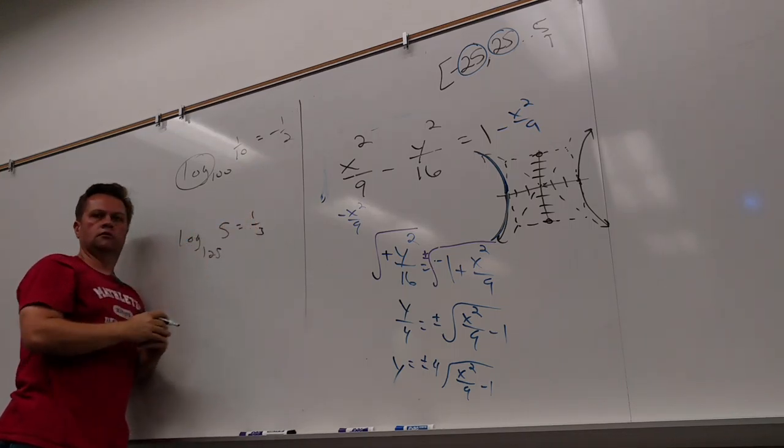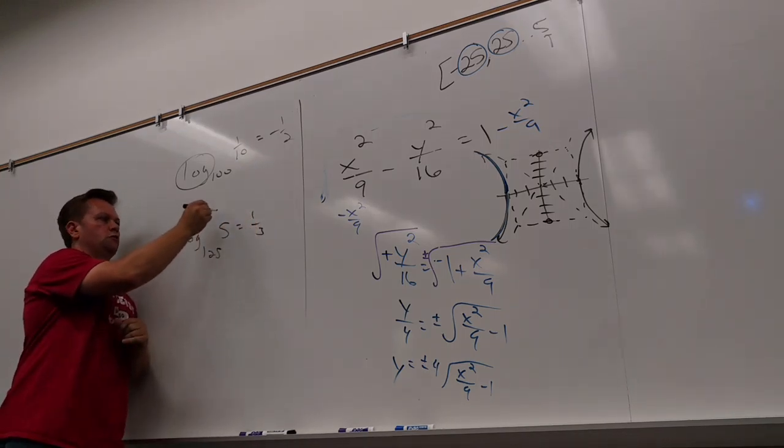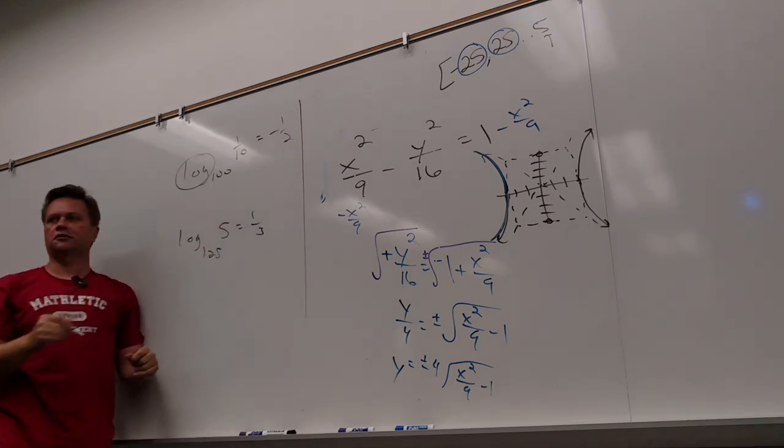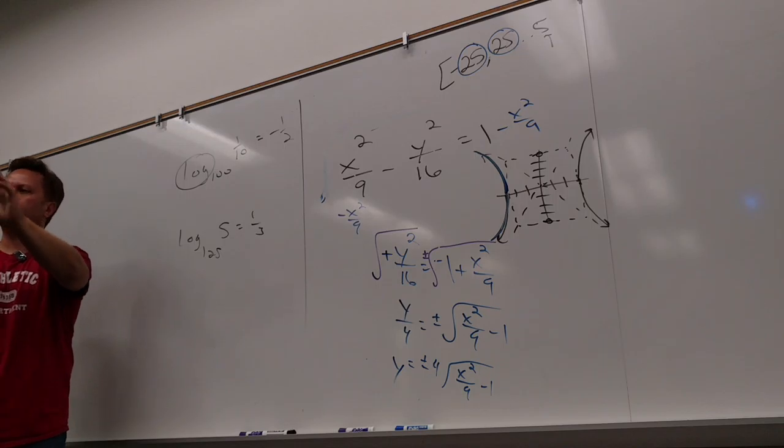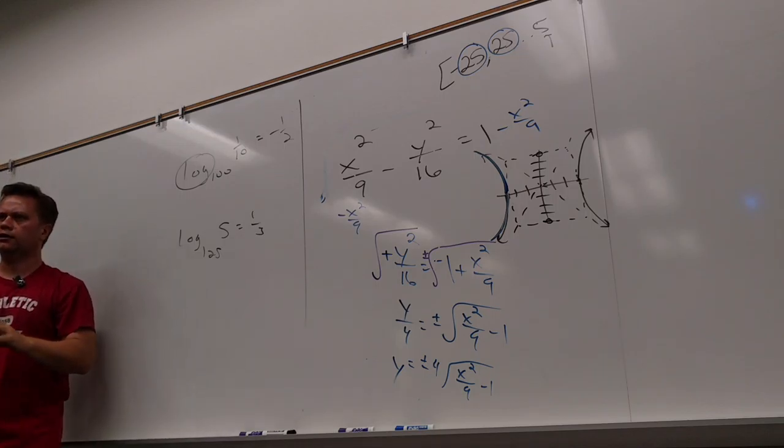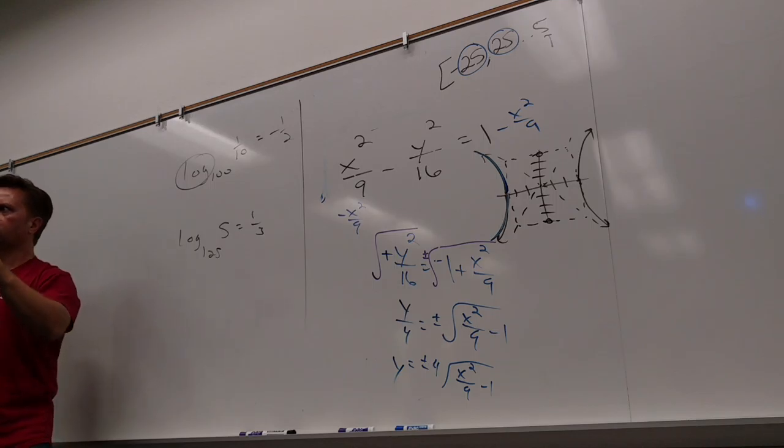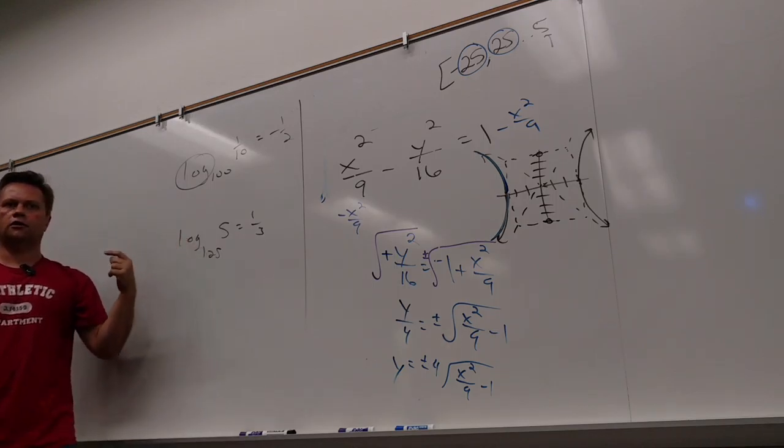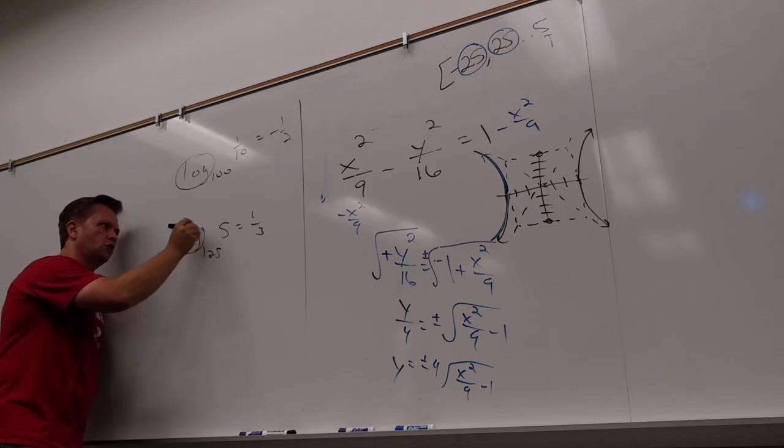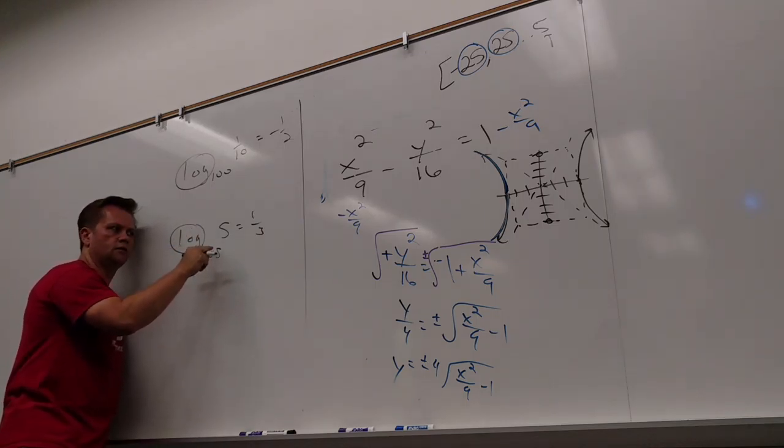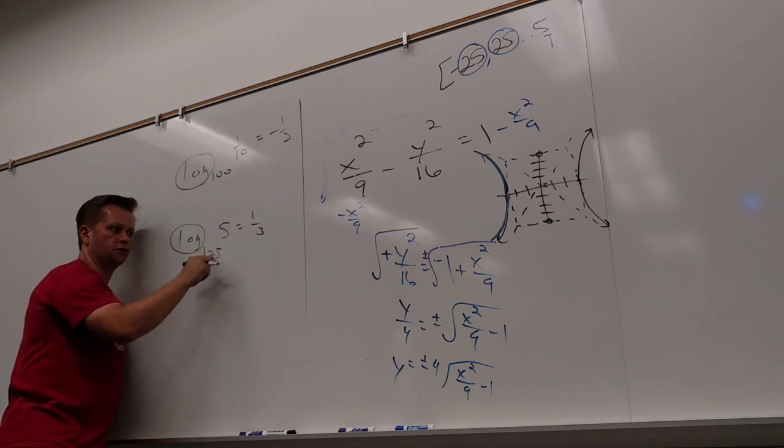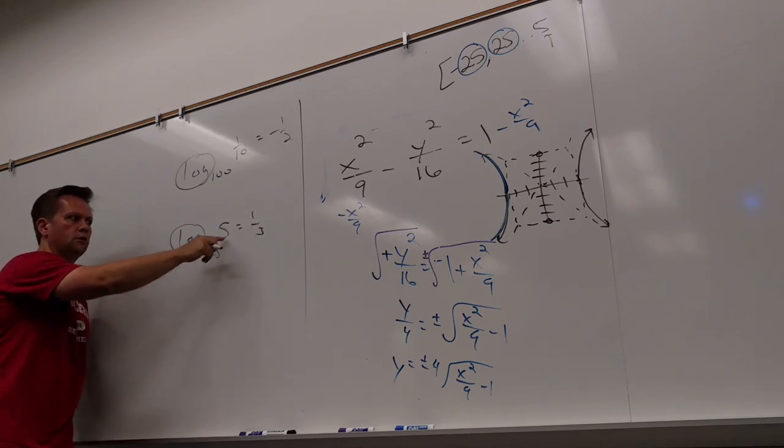So if I saw this log base 125 of 5, that's smaller than this, but not less than 1. So it's not going to be negative. It's just going to be some kind of root. And what root do I take of 125 and make it become 5? Third root. If it was one-fifth, that would be negative one-third. Because now it's a number less than 1. The only way to make that happen is a negative power, make it flip, become a fraction.